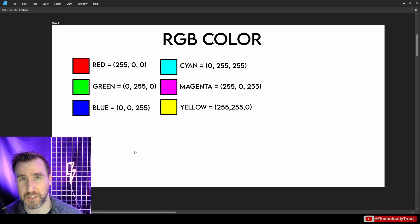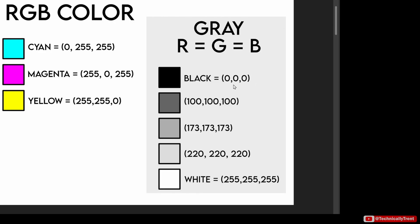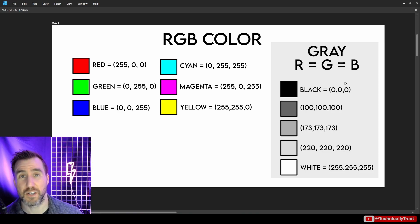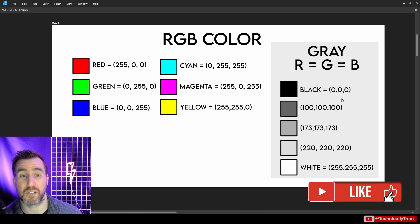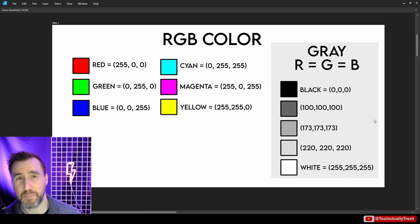Since we're going to be working with black and white images, we should understand what black and white actually means. Gray happens when we have red, green, and blue values all the same. When they're all 0, we have black. When they're all 255, we get white. When there's some other value in between, we get a level of gray — the lower the value, the darker the color. In a true black and white image, every pixel in your document will have equal R, G, and B values.